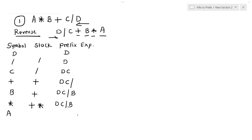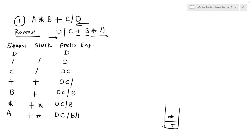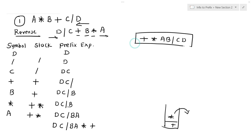Then comes a — it is an operand, so it goes into the prefix expression. The expression is now: d, c, division, b, a. We have reached the end of the expression with two operators remaining in the stack: plus and multiplication. We remove them from top to bottom, giving: d, c, division, b, a, multiplication, plus. Now we reverse this to get the prefix expression: plus, multiplication, a, b, division, c, d.